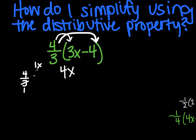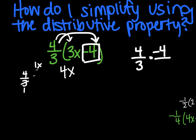So 4/3 — and don't forget that this is a negative 4 there. Step off to the side again and do 4/3 times negative 4 over 1. Simplify before you multiply, which we can't do here. So we take 4 times negative 4, which is negative 16, and then 3 times 1, which is 3.